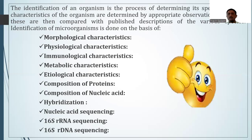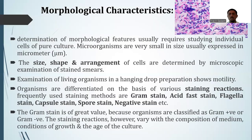When we carry out the proper protocol for the identification process, we go through different characteristics: morphological characteristics, physiological or immunological characteristics, metabolic characteristics, etiological characteristics, protein composition, nucleic acid composition, hybridization methods, and nucleic acid sequencing with respect to ribosomal RNA sequencing. By these methods, we can conclude whether a particular organism belongs to a particular group or whether it has already been reported, ultimately reaching the species level.